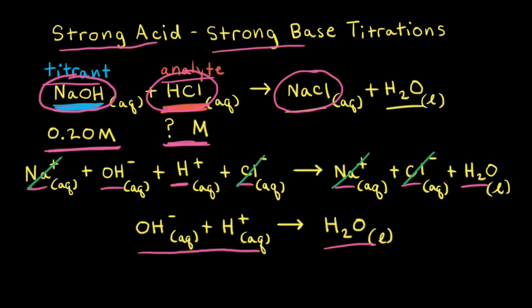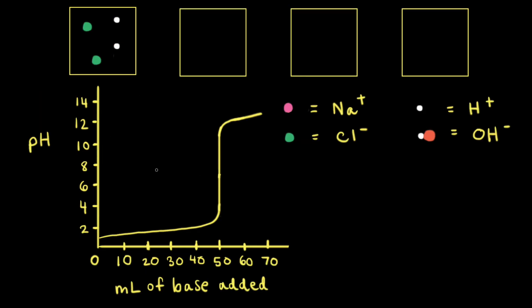Our goal for the strong acid–strong base titration is to find the concentration of hydrochloric acid using a titration curve. For titration curves, you put the pH on the y-axis and the titrant on the x-axis — in this case we're adding base to our solution of hydrochloric acid. Before we use our titration curve to find the concentration, let's go through the curve and look at some particulate diagrams, which help us understand what's going on in the actual solution. We'll leave out water molecules for clarity.